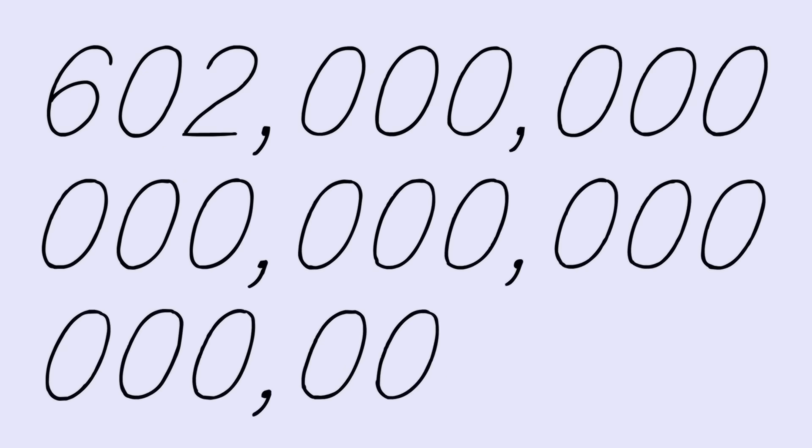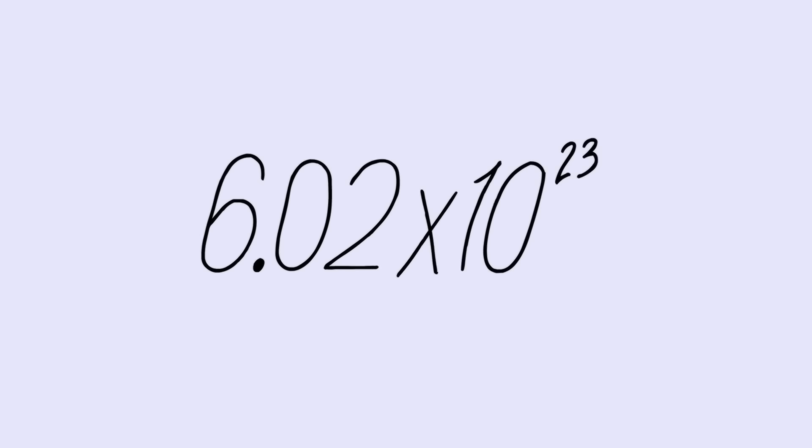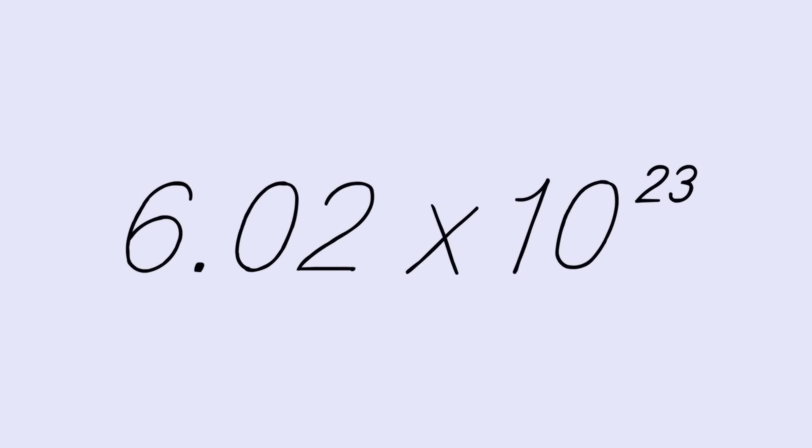That is, you have 6 with 23 zeros after it, particles of gas in a container. Or in scientific notation, 6.02 times 10 to the 23rd particles.